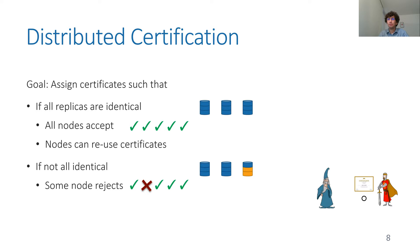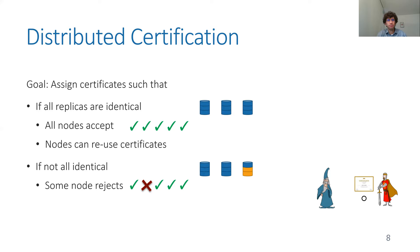Our goal is to allow the prover to assign certificates such that if all replicas are identical — the state is okay — then all nodes accept. If something goes wrong, say one of the replicas goes corrupted, then at least one unit identifies it and rejects the state of the system. The units then re-compute, re-replicate the data, and also compute new certificates. The network may also reuse these certificates to verify the state again and again periodically.